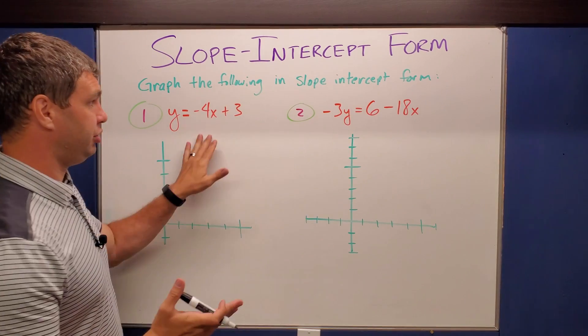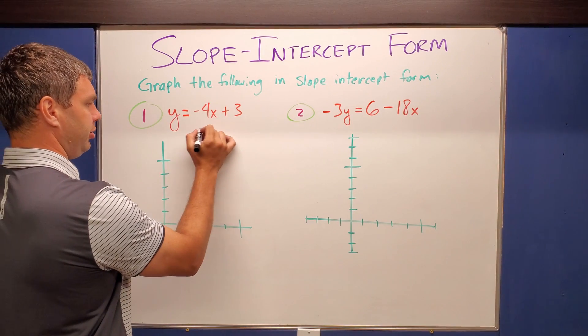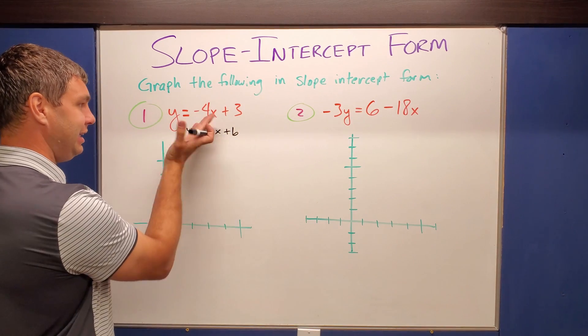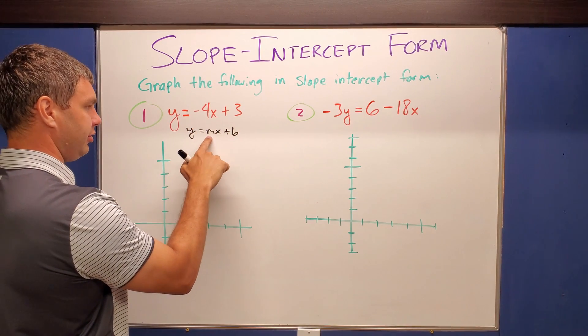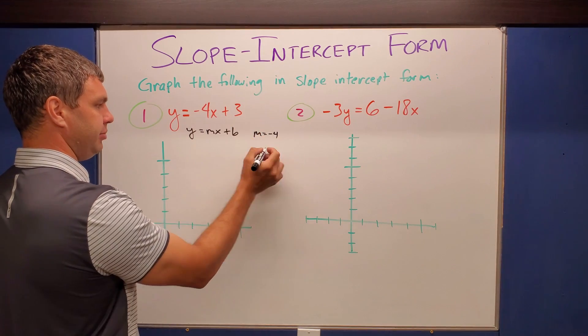Okay, now it wants us to graph these equations using slope-intercept form. So for this first one, if you remember it should be written in the form y equals mx plus b. Is it? And yes it is. Y equals negative 4. Negative 4 is going to be our slope. I'll write that off to the side here. And our b is going to be a 3.